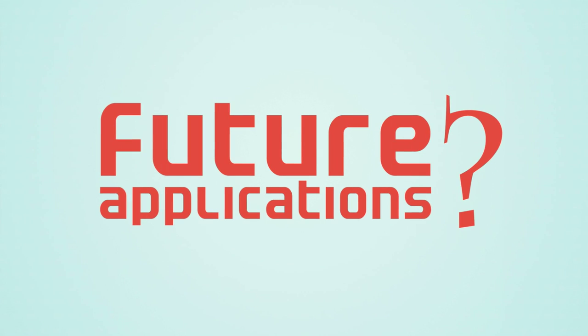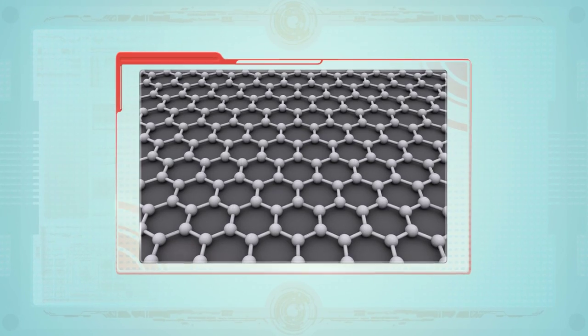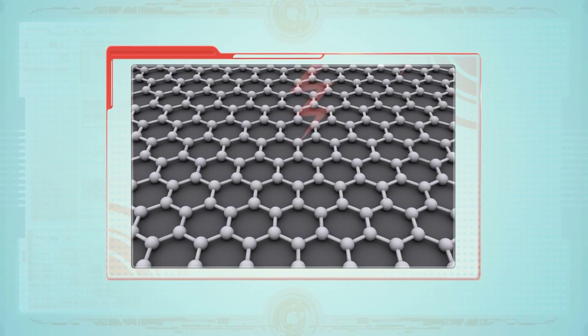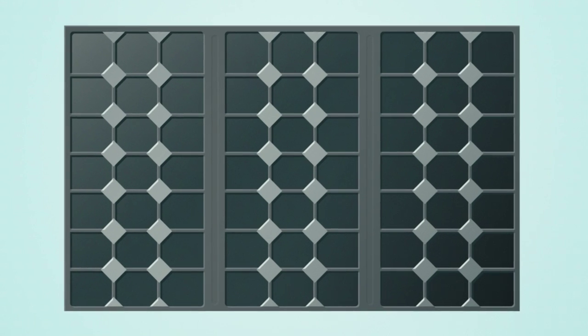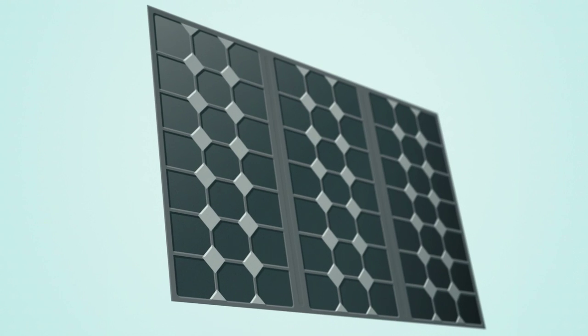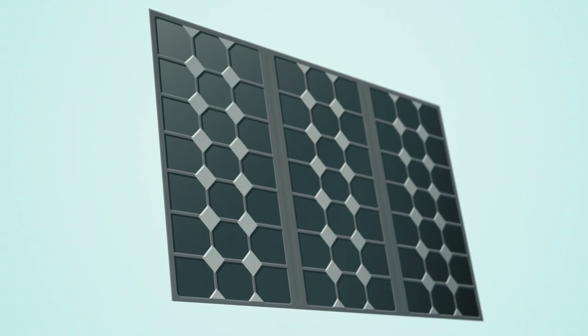Let's look at some possible future applications of this amazing material. Graphene is nearly transparent to light. It's also a terrific conductor of electricity. As a result, graphene could be used in combination with other photovoltaic devices to make solar panels that are thin, flexible and cheap.